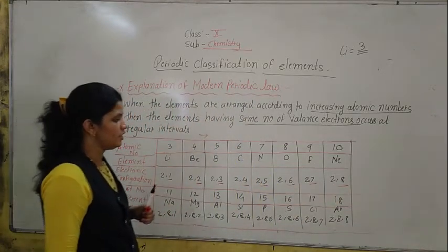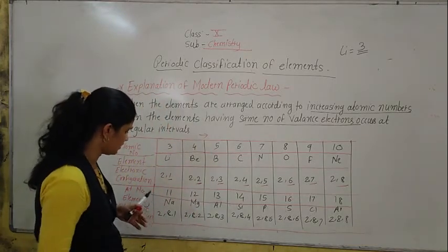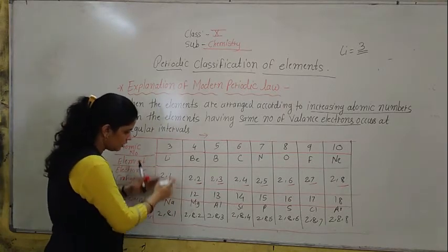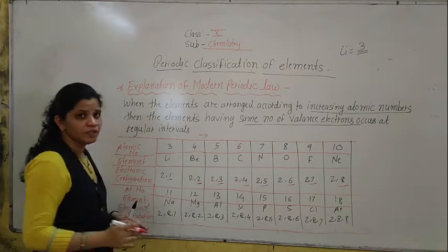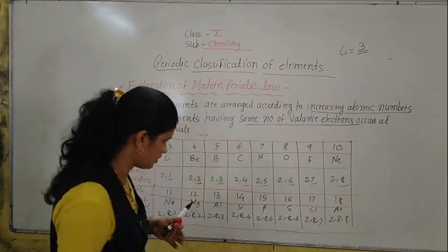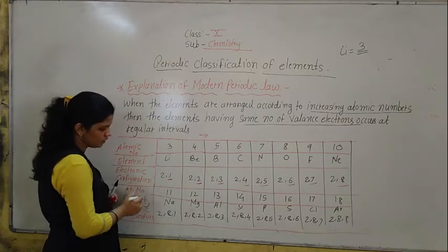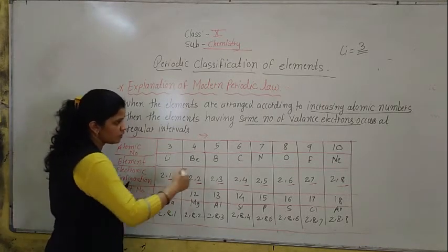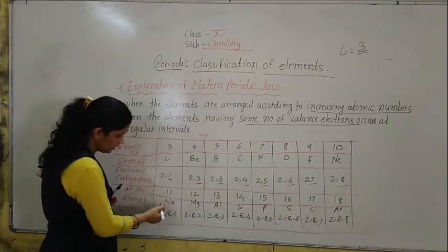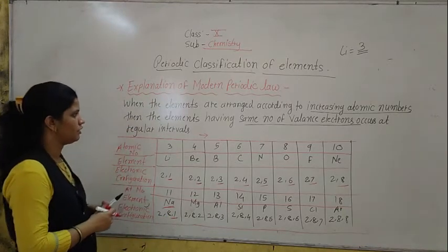Now see, it repeats after a regular interval. Atomic number 11 is sodium. Now lithium and sodium — they are in one group. In the outermost shell, both have 1 electron. After a regular interval, after the 11th element, the sodium also has 1 electron in the outermost shell.